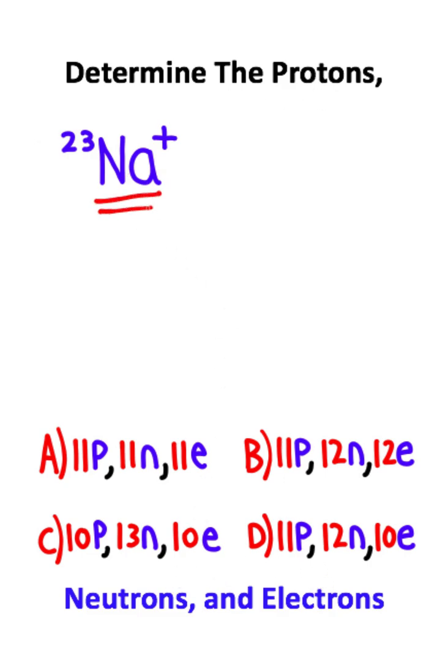The first thing I'm going to do is look for sodium on a periodic table. Sodium is the eleventh element. This is what's known as the atomic number, and the atomic number refers to the positively charged protons in the nucleus of the atom.